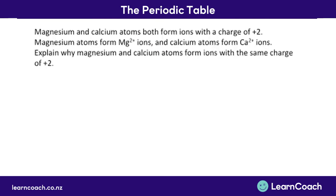Let's have a look at a question now. It's very common for periodic table questions to be mixed with atoms, isotopes, and ion questions. In this case, the question says magnesium and calcium atoms both form ions with a charge of positive 2. Magnesium atoms form Mg²⁺ ions and calcium atoms form Ca²⁺ ions. Explain why magnesium and calcium atoms form ions with the same charge of positive 2.